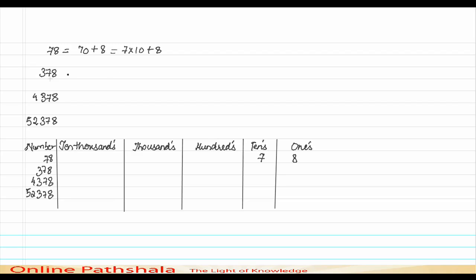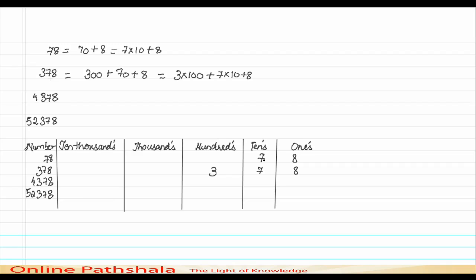Now talking about 378 — the expansion for 378 is 3 into 100 plus 7 into 10 plus 8. So 3 is in the hundreds place, 7 is in the tens place, and 8 is in the ones place. To write 378 in the table: 3 goes in the hundreds place, 7 in the tens place, and 8 in the ones place.